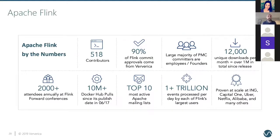Very quickly, before getting into technical details, I want to talk about the project. Apache Flink is a top-level Apache project with a very vibrant, active, and diverse community. We are consistently ranked as one of the most active projects in the Apache ecosystem, both in terms of commits and mailing list traffic. If you're interested in getting involved, the user mailing list is a great place to start.